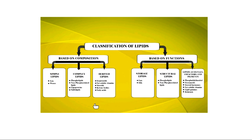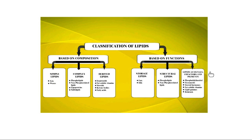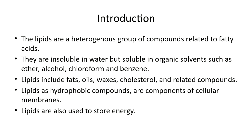The classification of lipids on the basis of composition divides them into three parts: simple lipids, complex lipids, and derived lipids. On the basis of function, they are again divided into three parts: storage lipids for energy storage, structural lipids for formation of structures, and signal lipids functioning in pigment. We will define a few from each category.